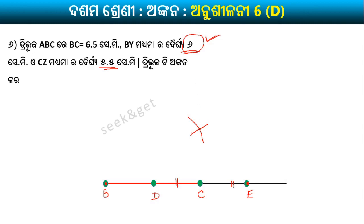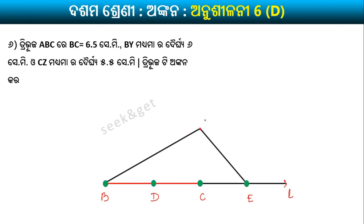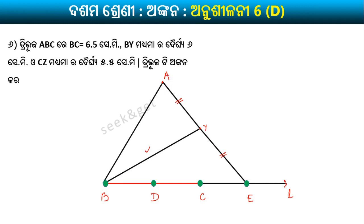Using the compass set to 5.5 cm, cut an arc. Then measure the length EY externally, place the compass at point Y, and cut another arc above. The intersection of these arcs and the rays gives the required distances and completes the final construction.